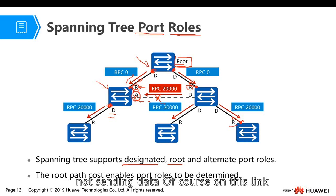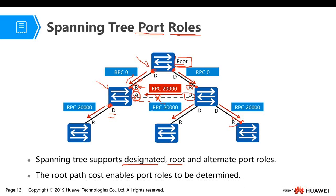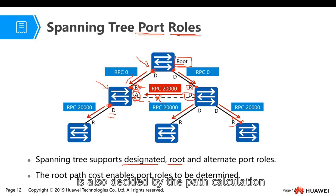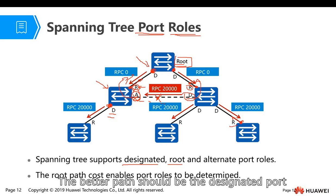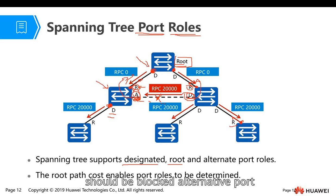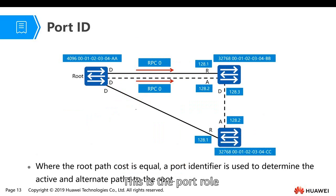The interface that is blocked — the link is blocked — they are the alternative port. This port is blocked, not sending data. On this link, the other side is the designated port. The designated port and the alternative port — which port should be blocked — is decided by the path calculation. The better path should be the designated port, and the port with the worse cost should be blocked — that is the alternative port.